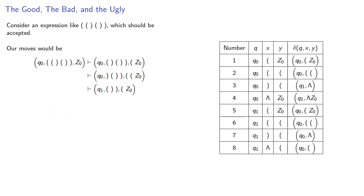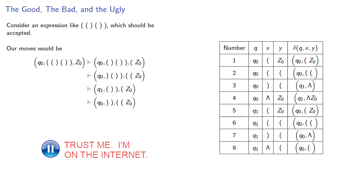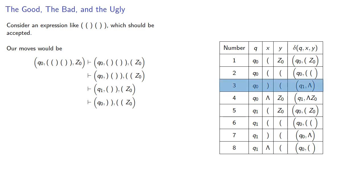In q1, reading an open parenthesis when there's an open parenthesis in our stack gives us two open parentheses and sets us back to state q0. In q0, reading a closed parenthesis when there's an open parenthesis in the stack means that open parenthesis in the stack is replaced by the empty string, and we change to state q1.